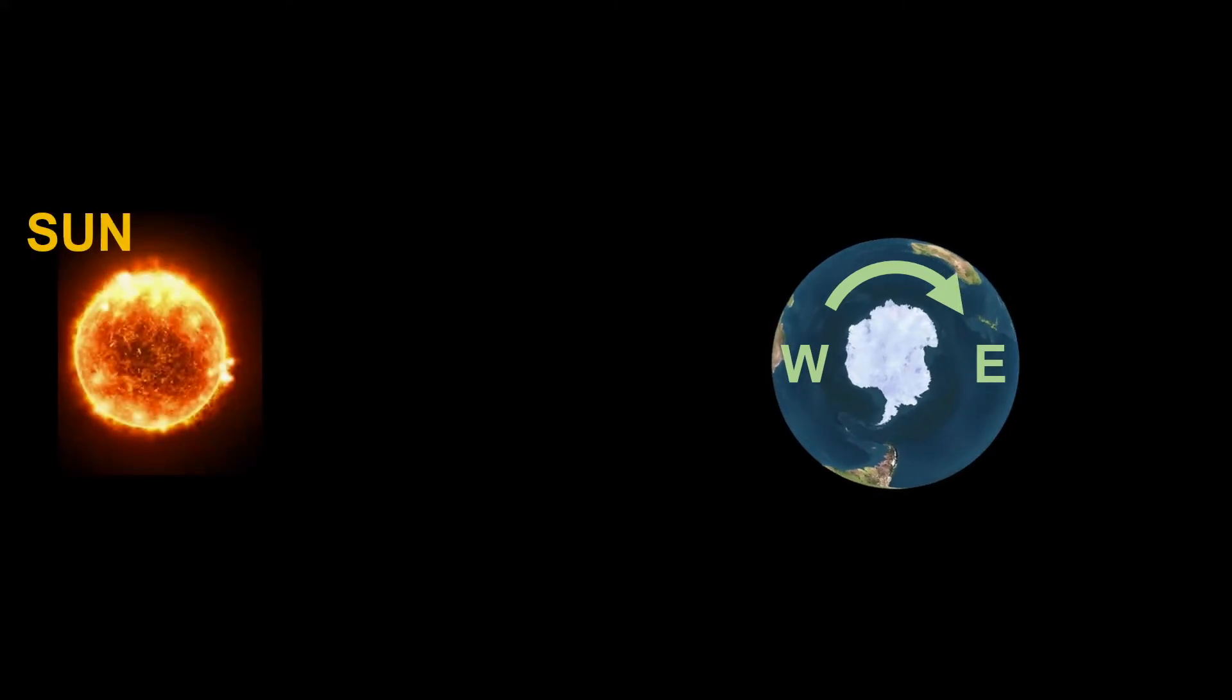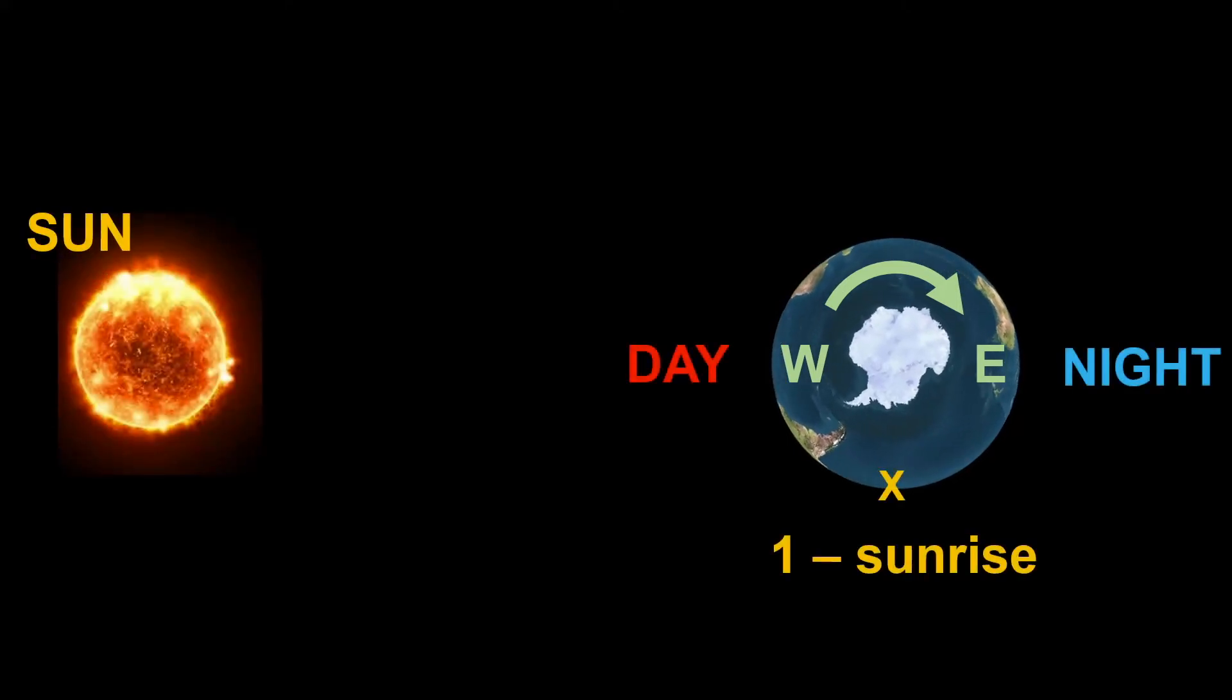The reason why we see sunrises and sunsets is because the earth is rotating. Let's consider the view of the earth from the south pole. The earth is rotating in a clockwise direction here. If we put in the sun, the people at point 1 of the earth will see sunrise, and the people at point 2 of the earth will see sunset.